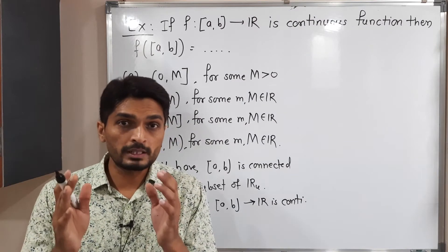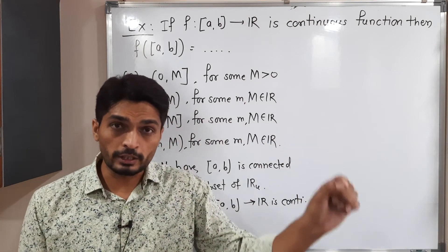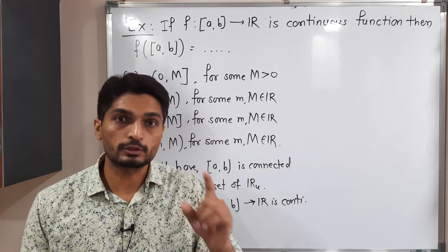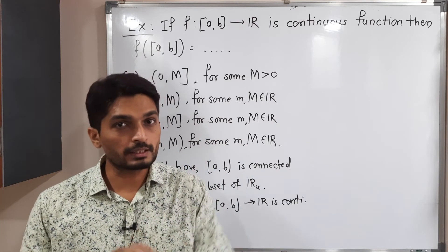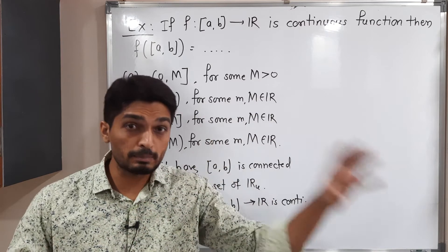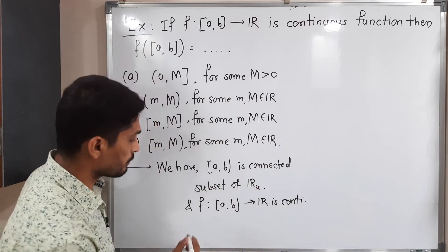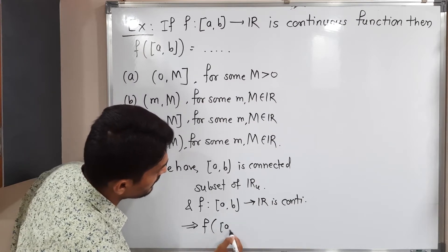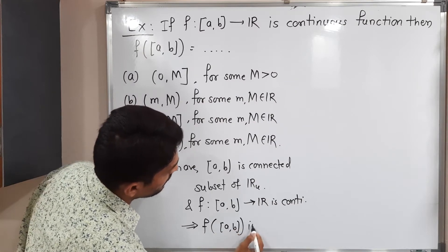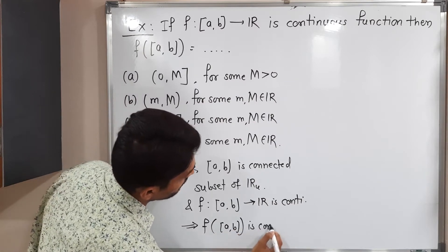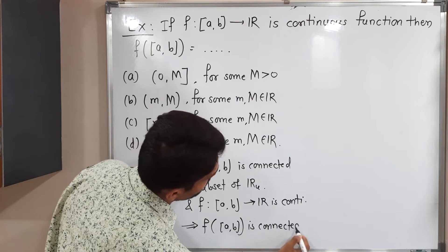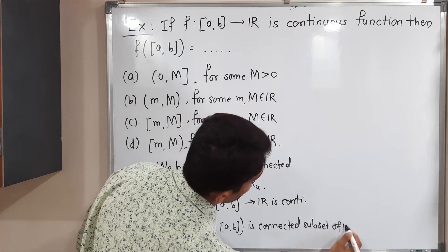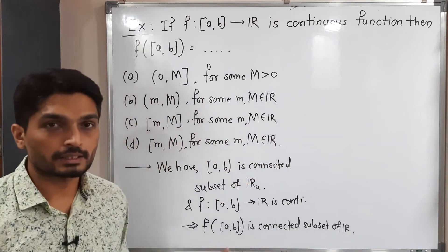When the domain is connected and the function is continuous, then f of closed interval [a,b] is also connected. So domain connected and function continuous implies its image set is also connected. Therefore, f of closed interval [a,b] is a connected subset of R, since the codomain is R.